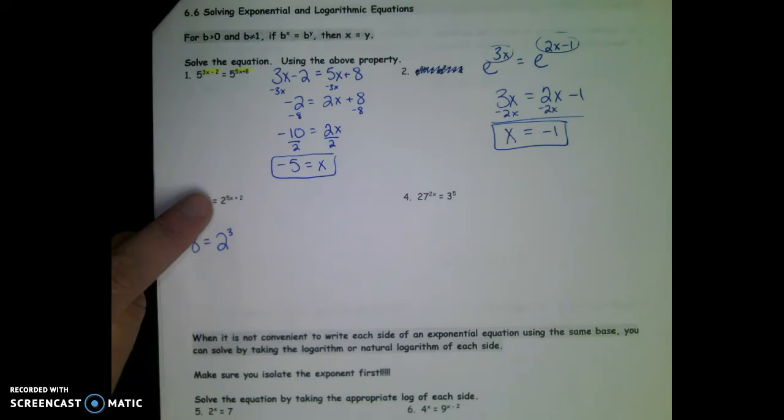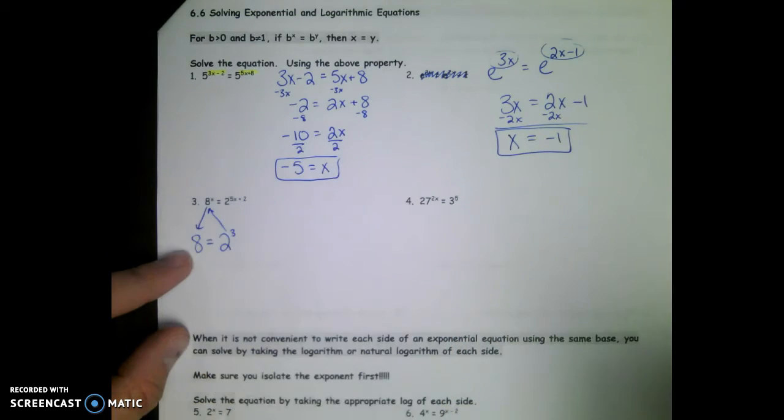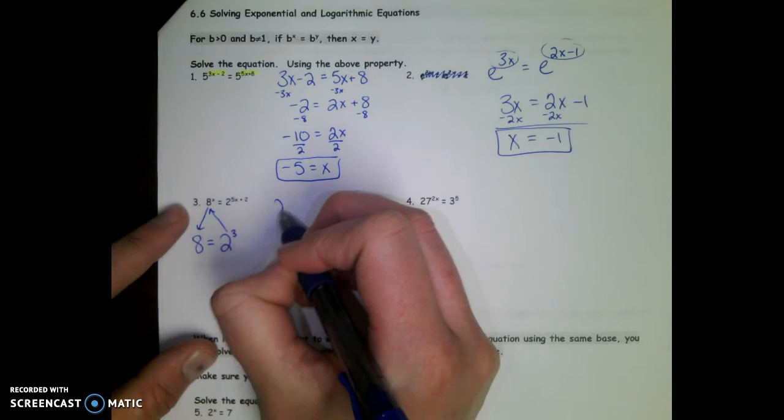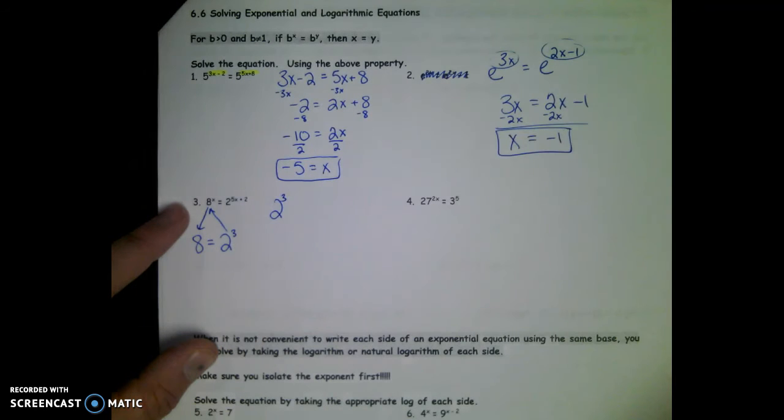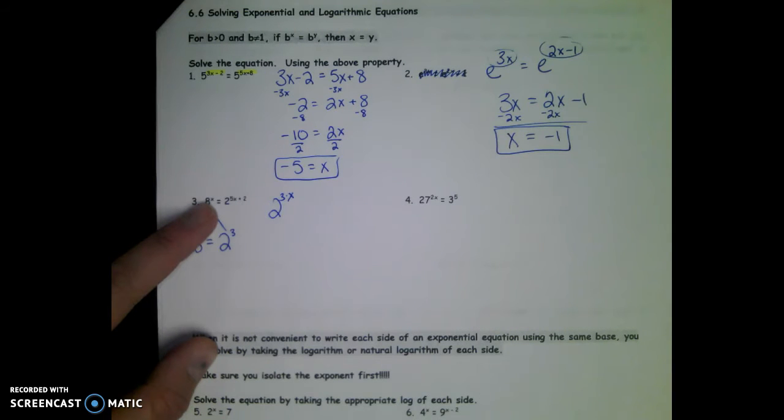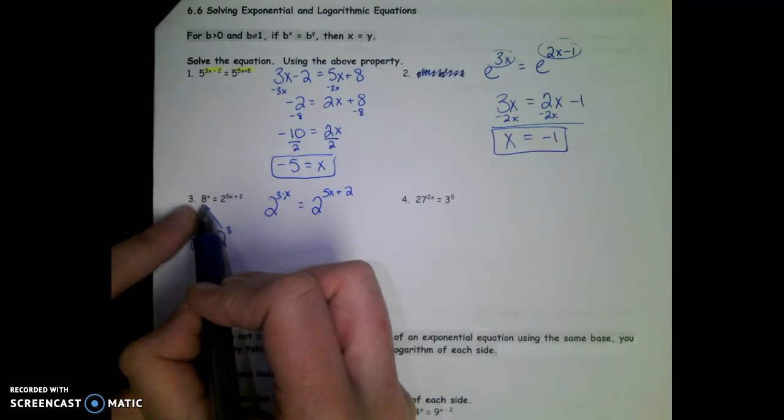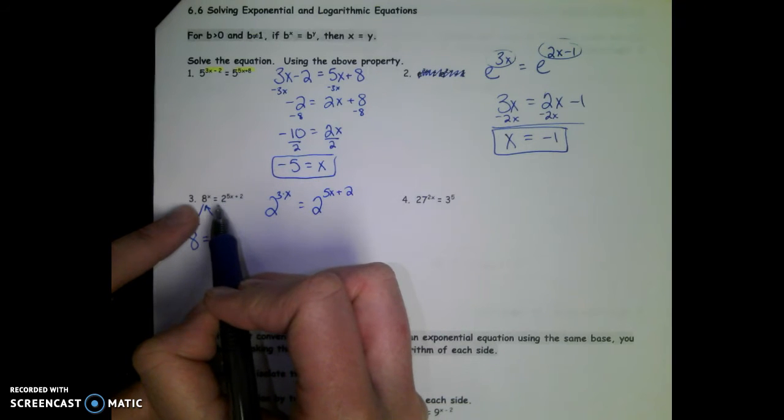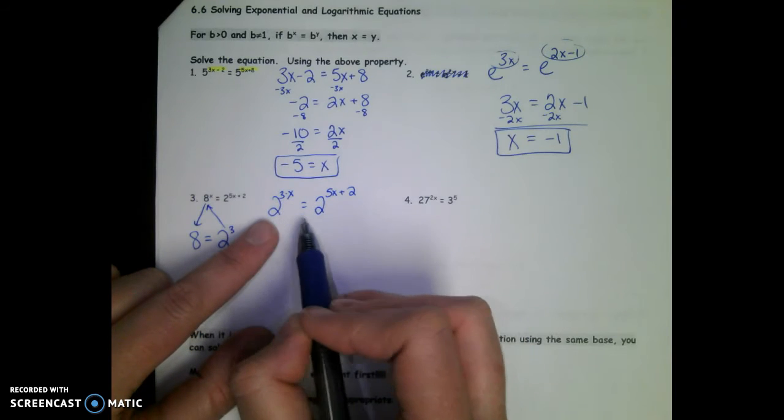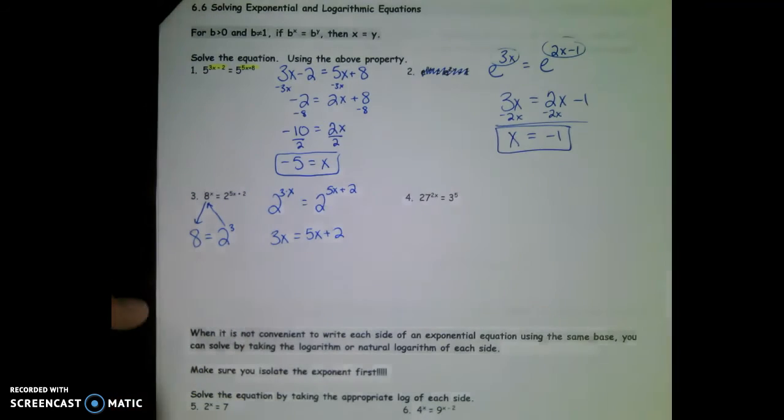So eight is the same as two to the third. You can't raise the other side to the third to make it match. You're not trying to make one side bigger. You're trying to make the bigger base smaller by rewriting it in terms of two. So we're going to take the eight out and put two to the third in its place. The left side will look like two to the third instead of eight. But that eight had an exponent of x, so you're multiplying three and x together. Now we have two to the stuff equals two to the other stuff, so stuff is going to equal other stuff. Take a moment, solve that equation.